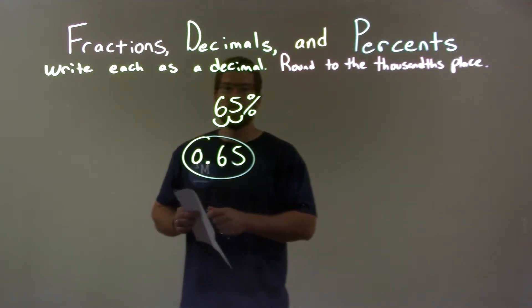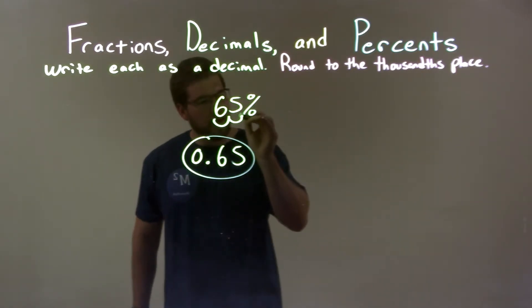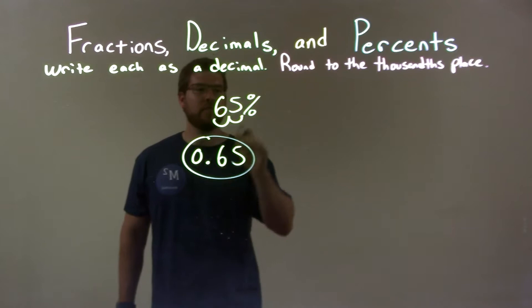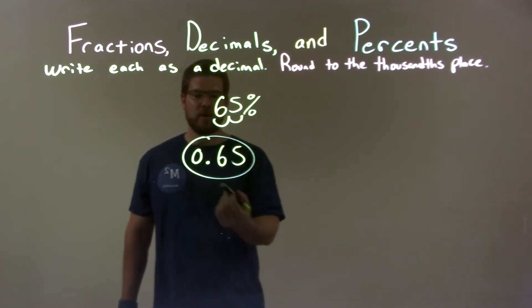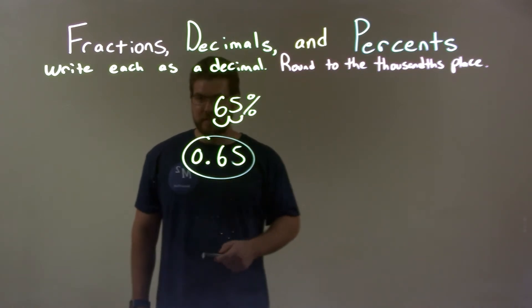So, quick recap, we're given 65%, and we need to convert that to a decimal. Well, the point's right there, move it two spots to the left, convert the percent to a decimal. So we're given 0.65, and that's it. Our final answer is 0.65.